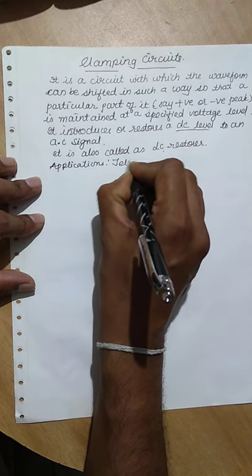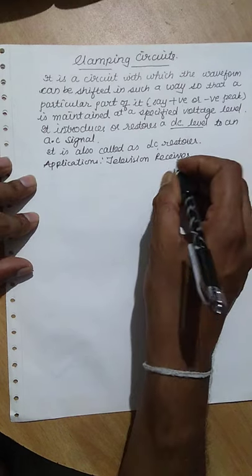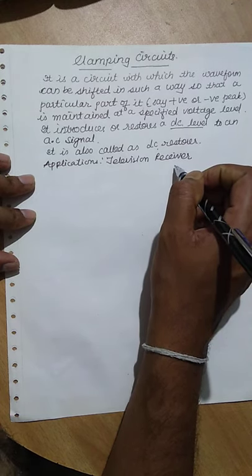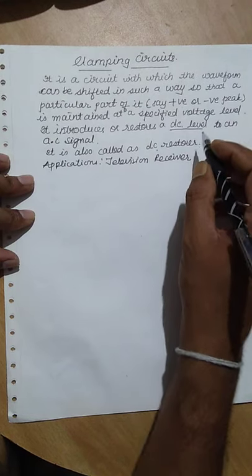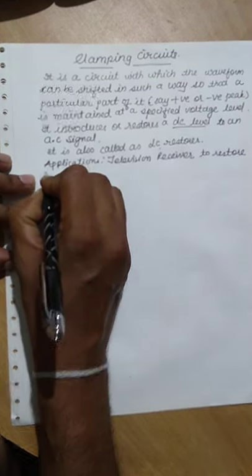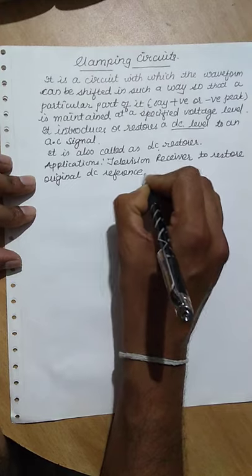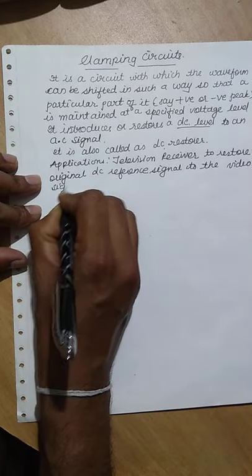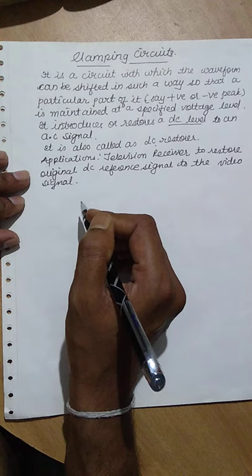One important application of the clamping circuit is in television receivers. In color television or monochrome television systems, the clamping circuit is used to restore the DC level of the video signal. The DC reference level in a TV system corresponds to the brightness level of the picture.